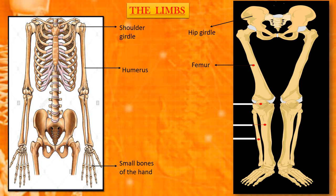The upper arm is joined to the spine with the help of the shoulder bones or the shoulder girdle. The upper leg and the lower leg together form the lower limbs. Femur is the thigh bone. There are many small bones in our hand, wrist and ankle. Femur is the longest bone in the body, and it is attached to the hip bones or the hip girdle.